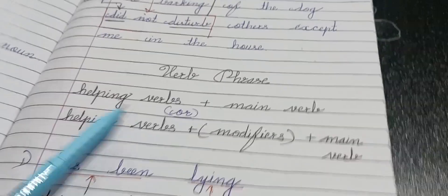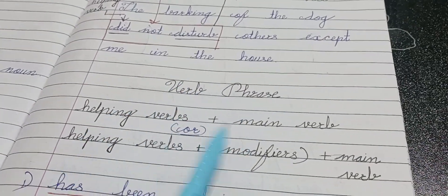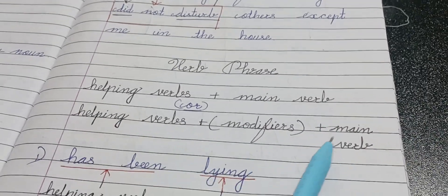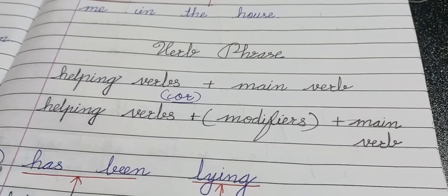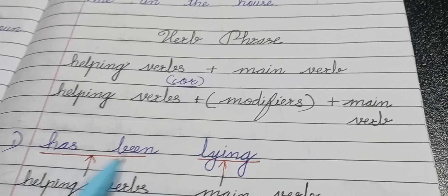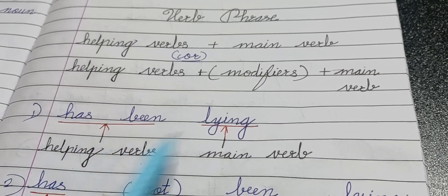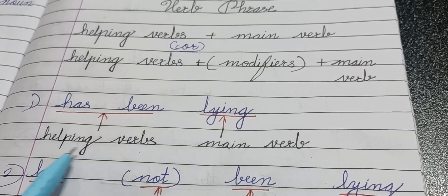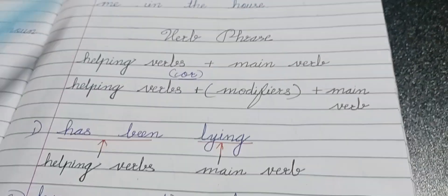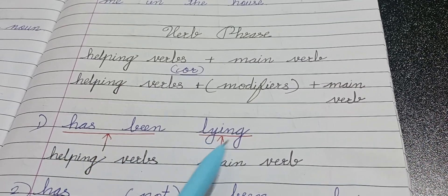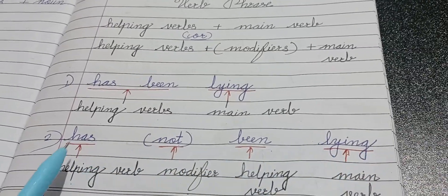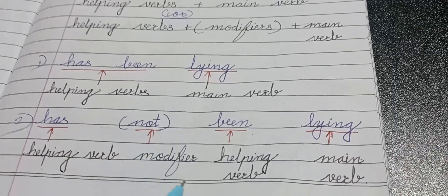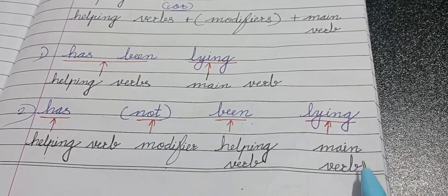The structure of a verb phrase is: helping verb plus main verb, or helping verb plus modifier plus main verb. For example, 'has been lying' — 'has been' is the helping verb and 'lying' is the main verb. Another example, 'has not been lying' — 'has' is the helping verb, 'not' is the modifier, 'been' is the helping verb, and 'lying' is the main verb.